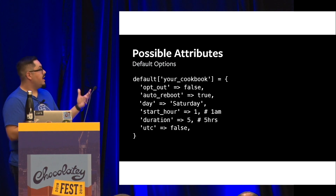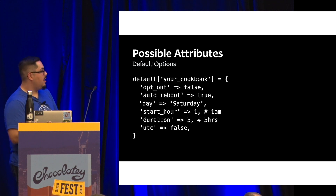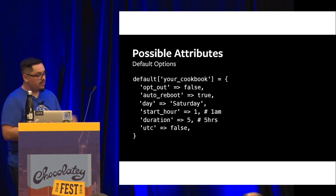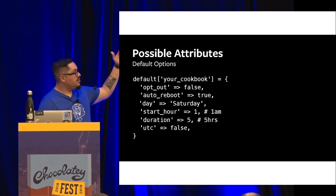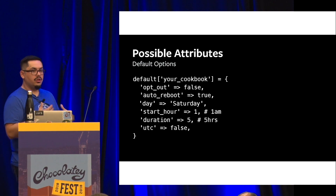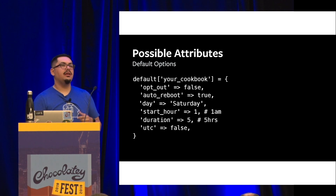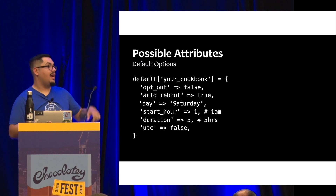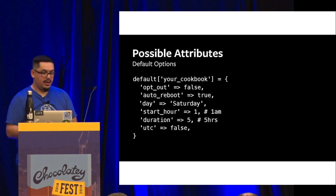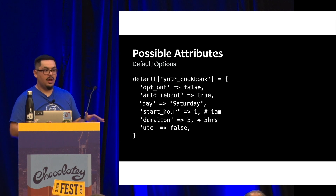Here we have our default attributes. I say 'your cookbook' because I want you to be able to walk away and actually put something together — we're hoping to open source ours but we're still working through that process. The first thing I want to call out is that first line: `default['your_cookbook'] = {}`. We have this saying at Facebook: own your namespace. When you do that, you ensure that nobody accidentally comes by and stomps on all of your work by adding to their attributes file instead of their recipe file. In our example, we have opt-out as the first option — if you don't want us to patch or reboot your machine, you can completely opt out and you're on the hook.